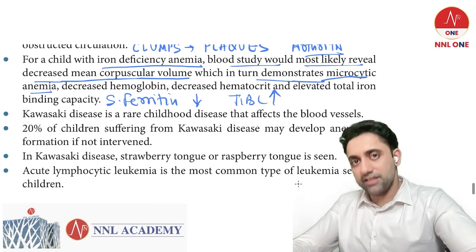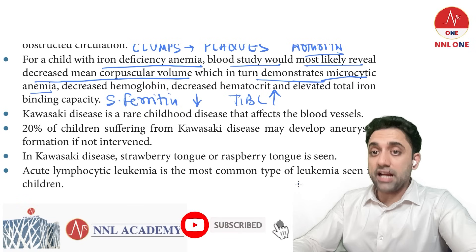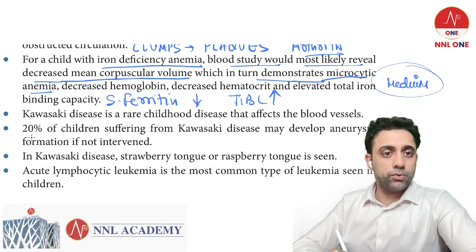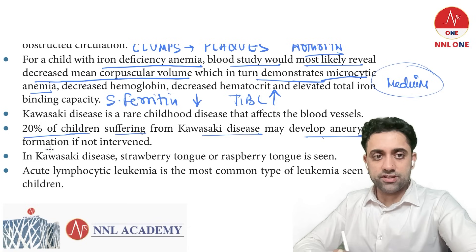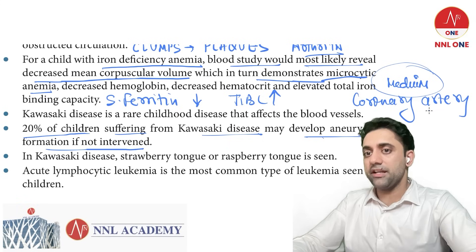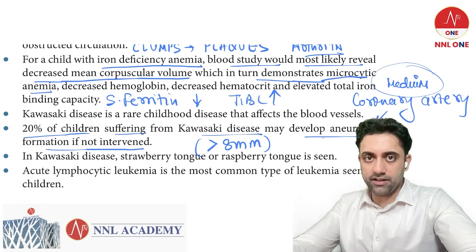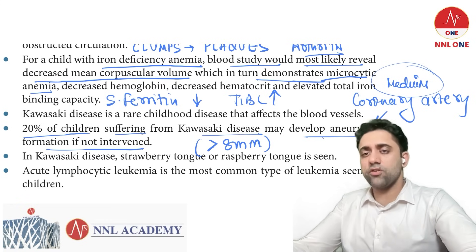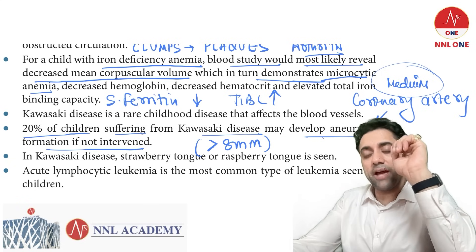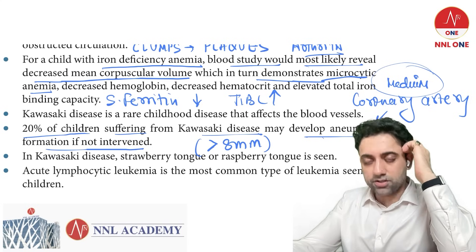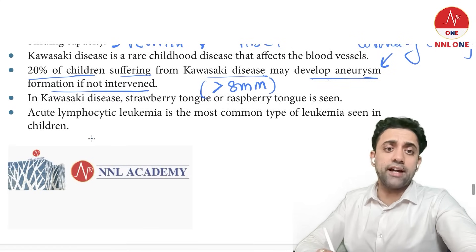Kawasaki disease — is it a large, medium, or small vessel vasculitis? Kawasaki is a medium vessel vasculitis. Twenty percent of children with untreated Kawasaki may develop aneurysm formation. It involves the coronary artery and can cause coronary artery aneurysm. A coronary artery diameter of more than 8 mm is significant.